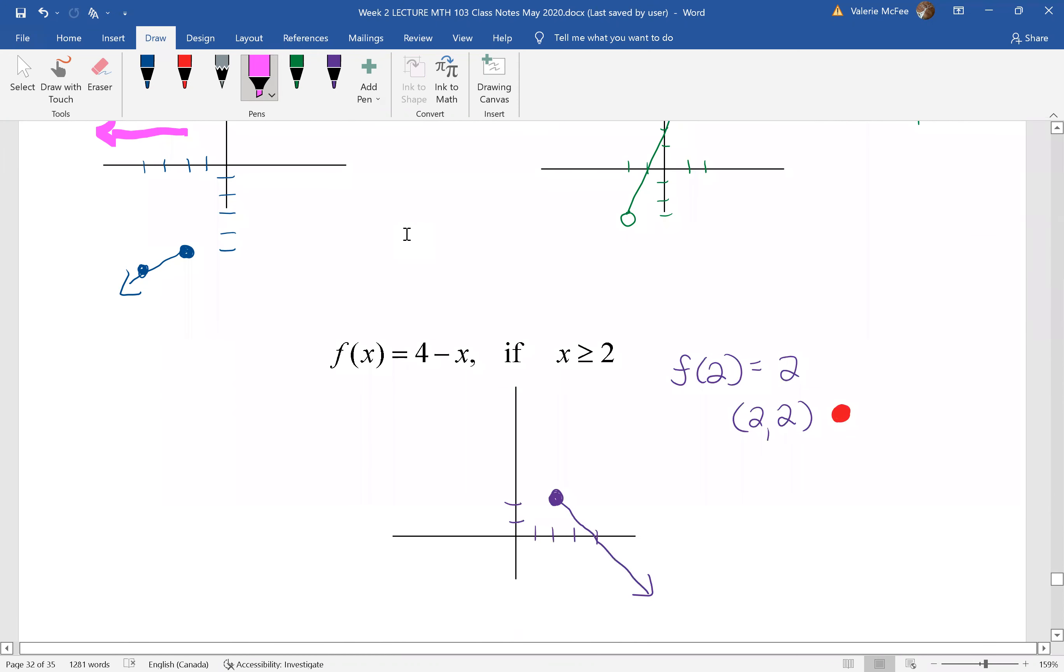And finally, in the third piece, you found the f of two, this time with a closed circle. And I decided to let x equal four. I found the f of four, which is four minus four or zero. This point here, another linear equation.